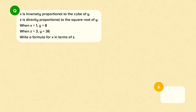X is inversely proportional to the cube of Y. Z is directly proportional to the square root of Y. When X equals 1, Y equals 8. When Z equals 3, Y equals 36. Write a formula for X in terms of Z. This question is different to the previous one because here we're asked to find a formula rather than a value. But just like the previous question, you must find the formula that links the given variables.